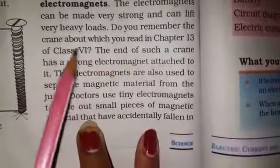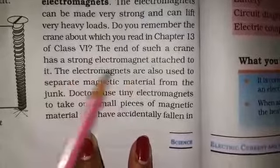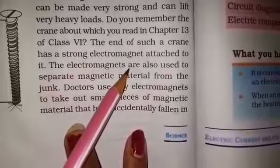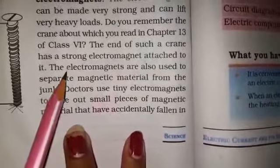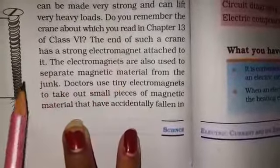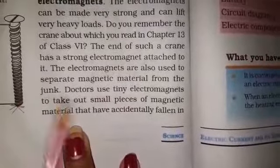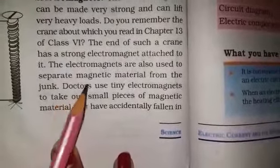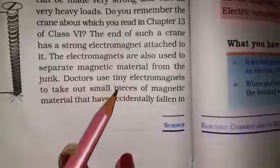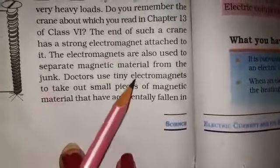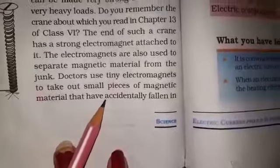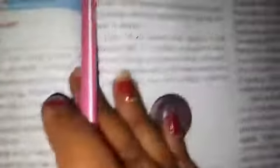The end of such a crane has a strong electromagnet attached to it, which is used to separate magnetic material from junk. The electromagnet is used in a crane to take out small pieces of magnetic material.